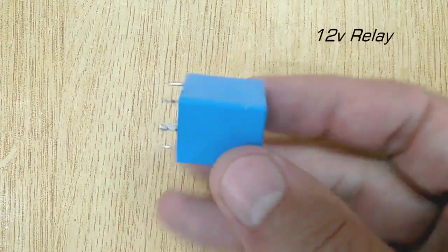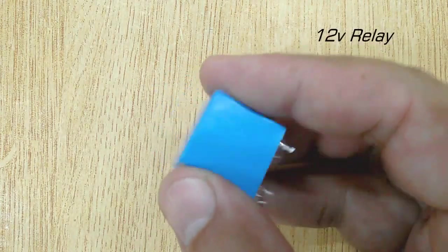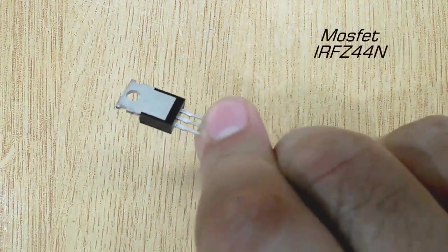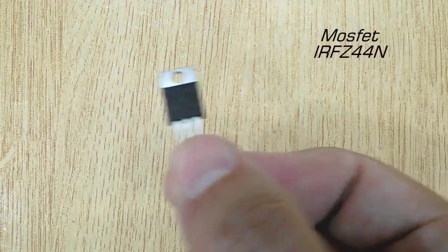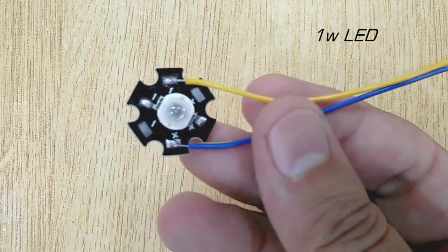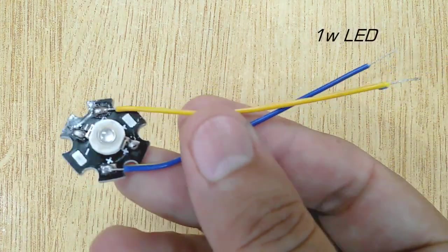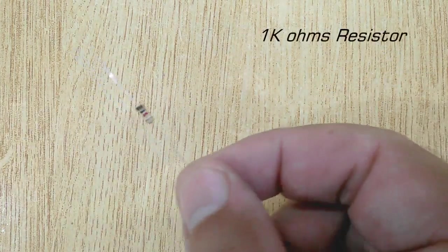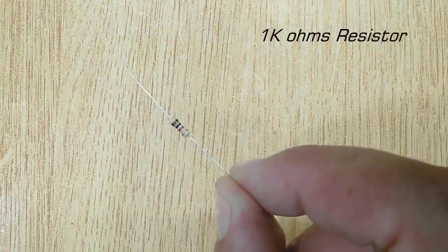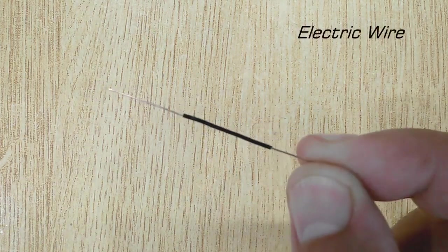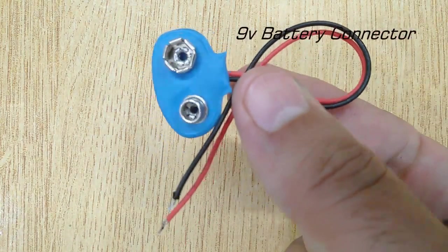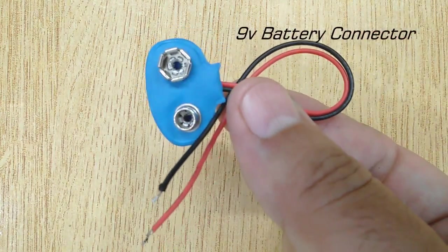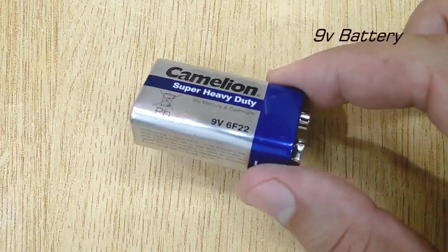12 volt relay, MOSFET IRF Z44n, 1 watt LED, 1K ohms resistor, electric wire, 9 volt battery connector, and 9 volt battery.